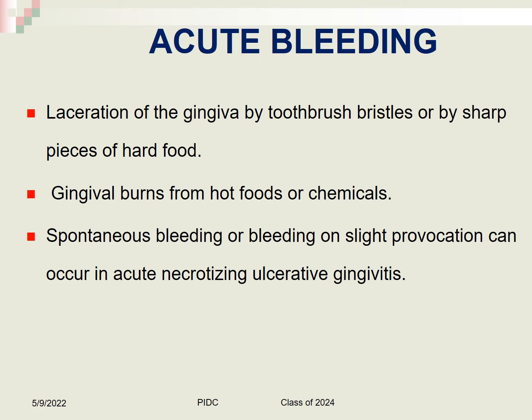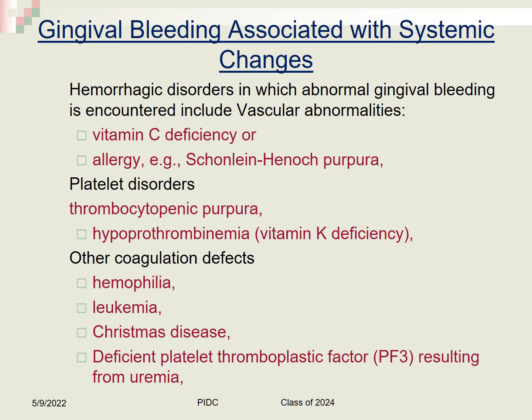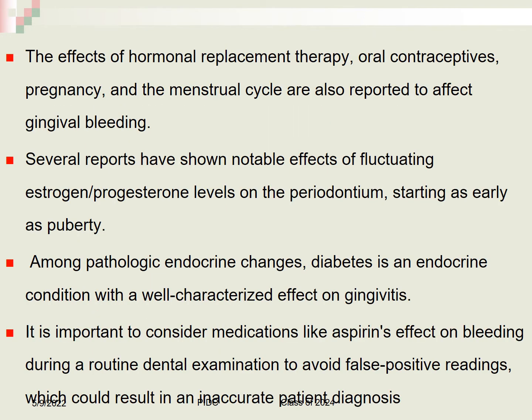Acute bleeding can be caused by laceration of the gingiva by toothbrush bristles, sharp pieces of hard food, gingival burns from hot foods, or chemicals. Gingival bleeding is also associated with systemic changes such as vitamin C deficiency, allergies, platelet disorders, and hemocoagulation defects. Hormonal factors including oral contraceptives, menstrual cycle fluctuations, and fluctuating estrogen and progesterone levels affect gingival bleeding. Diabetes has a well-characterized effect on gingivitis, and medications like aspirin can cause false positive bleeding readings during dental checkups.